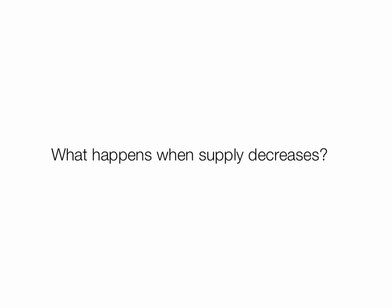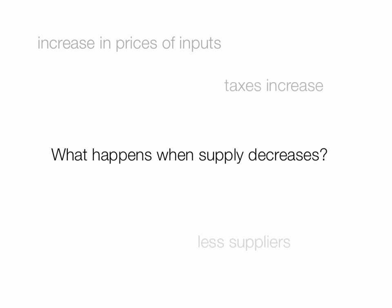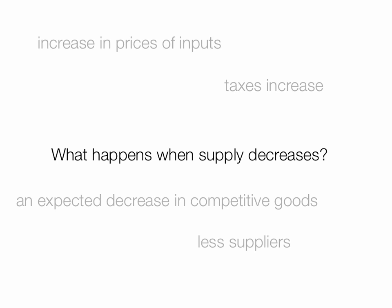So what happens when supply decreases? There's been an increase in input prices, taxes have increased, there could be fewer suppliers, an expected decrease in competitive goods, there are new regulations coming — and so on and so forth. All these can reduce supply.